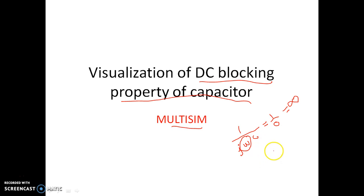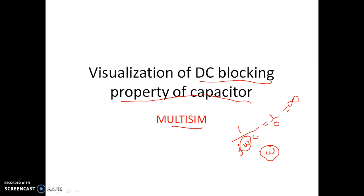But if you consider an AC signal, all AC signals have some particular fixed omega value. So if you put that in, the capacitor impedance will not go to infinity, and so we can conclude that it will pass the AC. This is one easy and explainable way of why the capacitor blocks DC and passes AC.